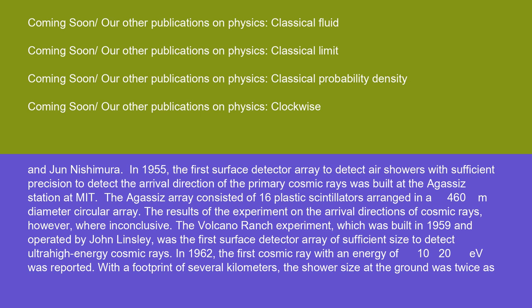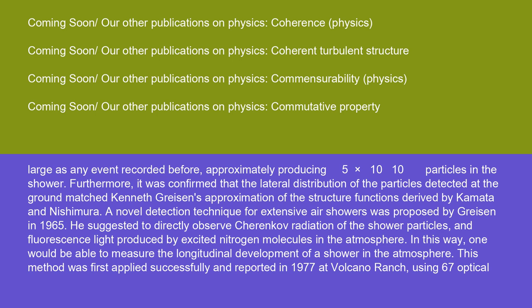The Volcano Ranch Experiment, which was built in 1959 and operated by John Linsley, was the first surface detector array of sufficient size to detect ultra-high-energy cosmic rays. In 1962, the first cosmic ray with an energy of 10^20 eV was reported. With a footprint of several kilometers, the shower size at the ground was twice as large as any event recorded before, approximately producing 5 times 10^10 particles in the shower. Furthermore, it was confirmed that the lateral distribution of the particles detected at the ground matched Kenneth Greisen's approximation of the structure functions derived by Kamata and Nishimura.